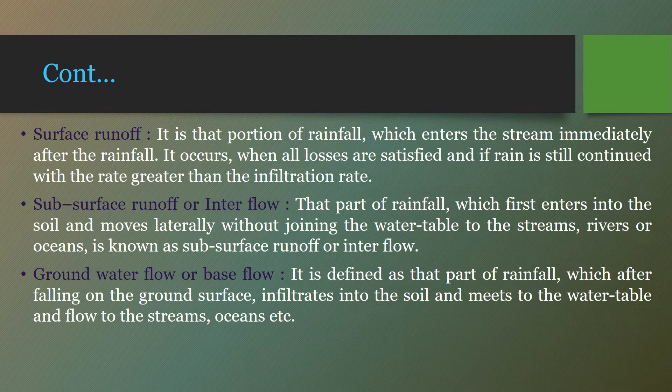Surface runoff is that portion of rainfall which enters the stream immediately after the rainfall, and it occurs when all losses are satisfied. If the rain continues at a greater rate than the infiltration rate, the portion of rainfall flows on the surface and ultimately meets the water body — we call it surface runoff.